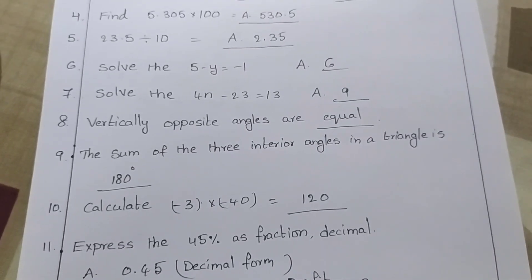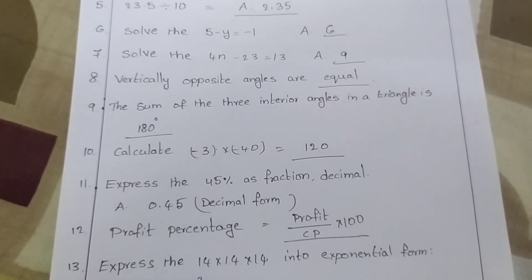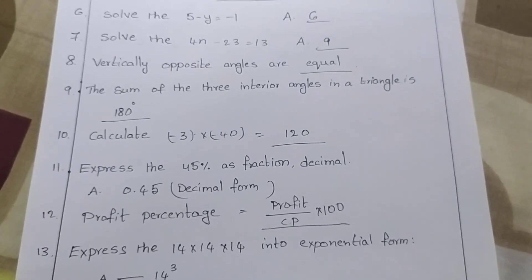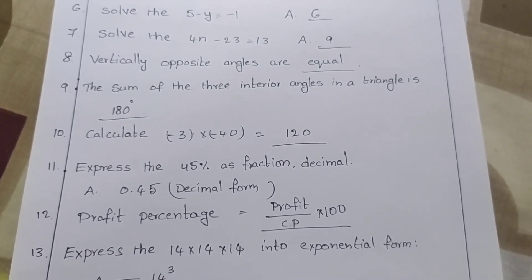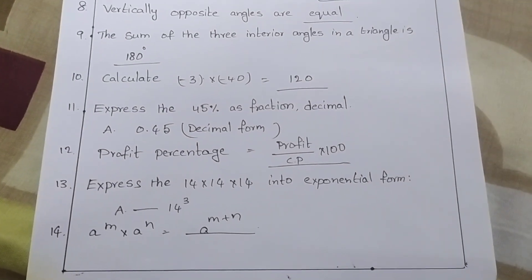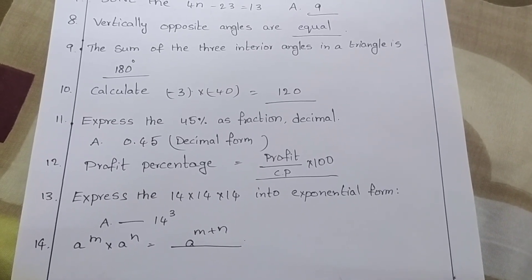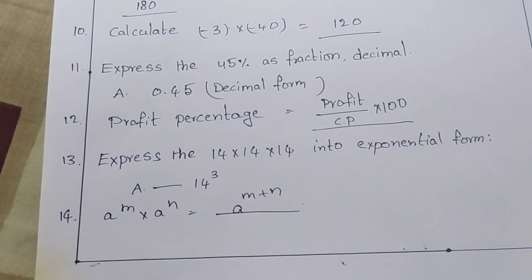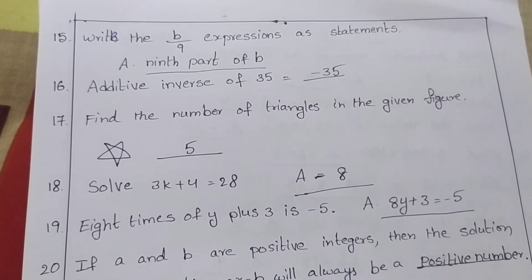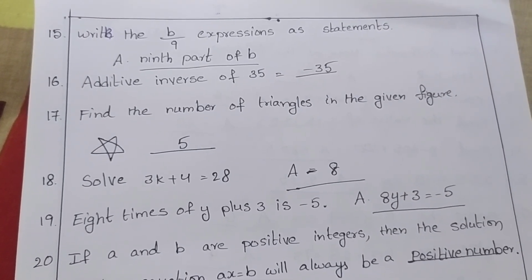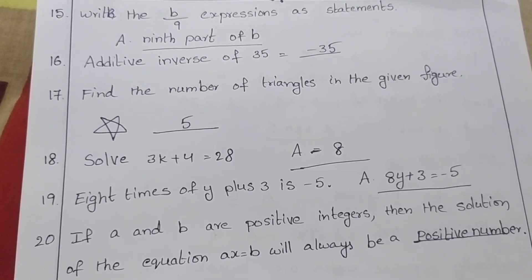Vertically opposite angles are equal. The sum of the three angles in a triangle is 180 degrees. Calculate: minus 3 into minus 40 is equal to 120. Express 45 percent as a decimal: 0.45. Profit percentage equals profit by CP into 100. Express 14 into 14 into 14 into 14 in exponential form: 14 to the power 4. The law: A to the power m into A to the power n is equal to A to the power m plus n. Write the expression b by 9 as a statement: 9th part of b. The additive inverse of 35 is minus 35.